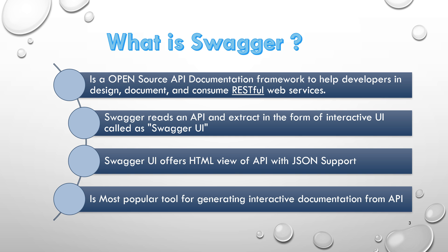Before we jump in, if you recall my last video where we executed the REST API using Postman, we had to set up Postman for each and every API method for testing. Not only that, from Postman's side, we didn't have any visibility about the number of API methods exposed from REST API, unless we go and check into our code directly.